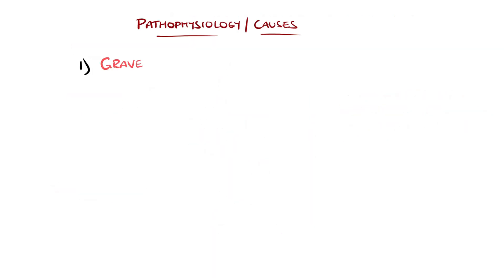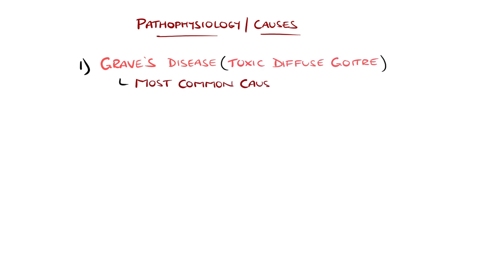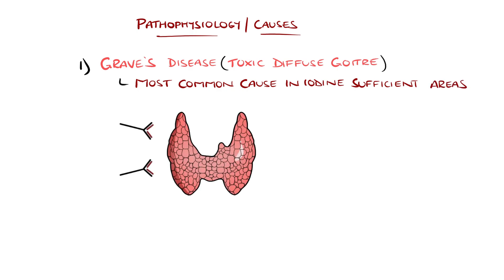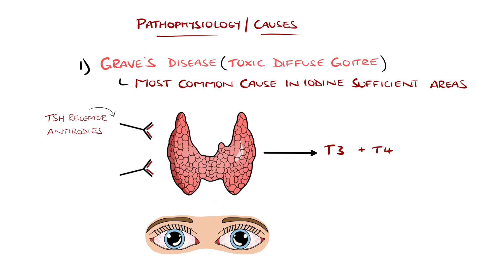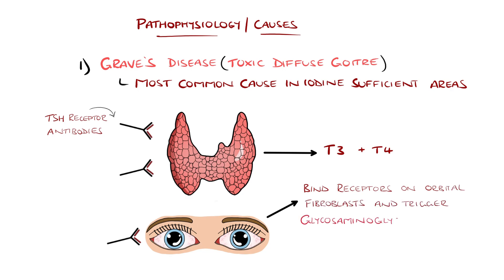The most common cause of hyperthyroidism in iodine-sufficient areas is Graves' disease, an autoimmune condition characterized by anti-TSH receptor antibodies. These antibodies bind to TSH receptors on the thyroid gland and stimulate it to produce thyroid hormone. There are also TSH receptors in other sites, including in the skin and retrobulbar spaces, and the TSH receptor antibodies are also thought to bind and activate these receptors on orbital fibroblasts.